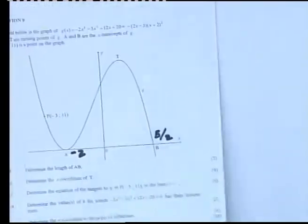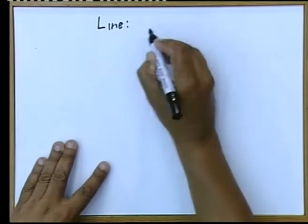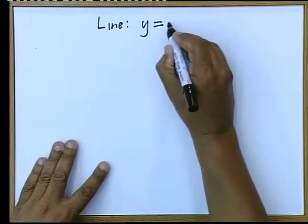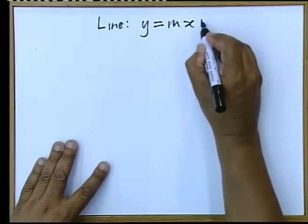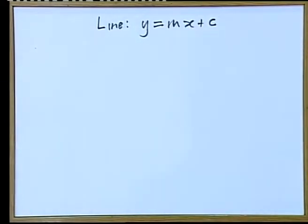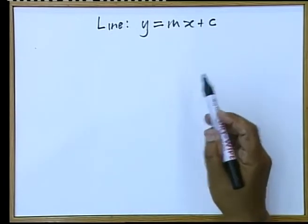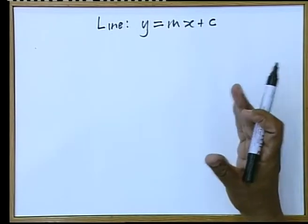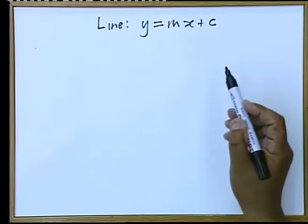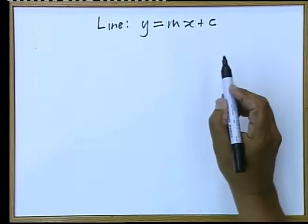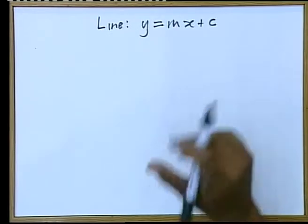Now when we deal with the straight line, based on the formula sheet that you would get in your matric exam, often you say that the equation of a line is Y equals AX plus Q, but the formula sheet says Y equals MX plus C, so we will stick to that notation for this lesson.